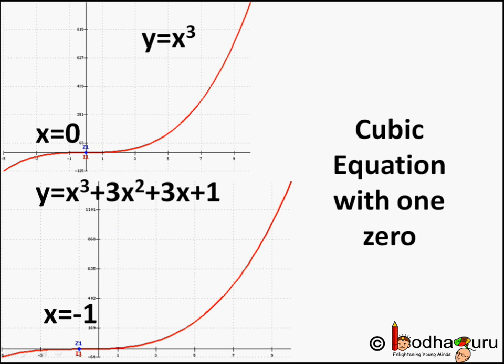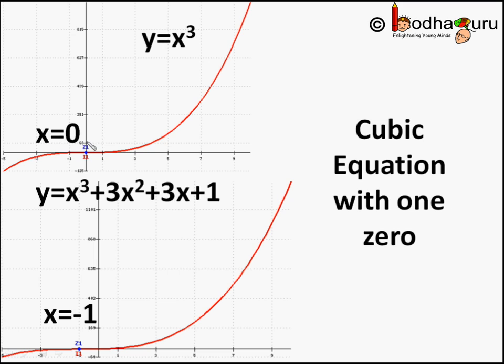Not necessary like x cube. This polynomial meets x-axis at one point only that is at 0 comma 0. So, it has only one zero. Polynomial x cube plus 3x square plus 3x plus 1. If you draw the graph of this polynomial it intersects x-axis at minus 1 comma 0. So, it has only one zero.